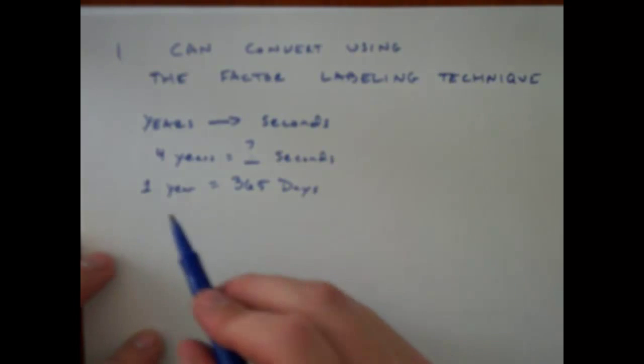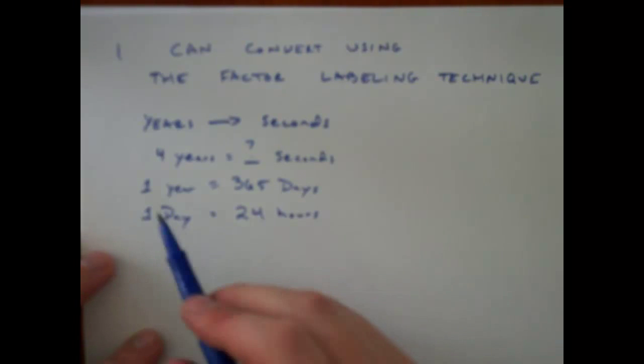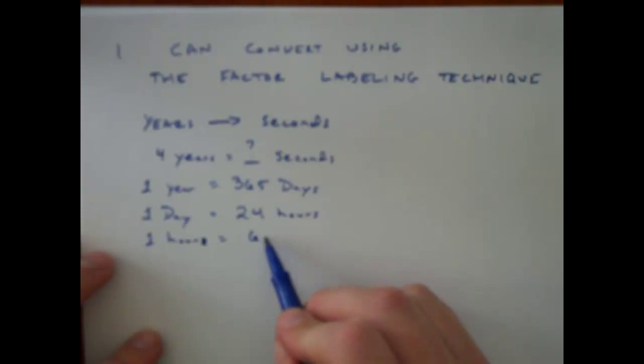And I can actually change days to something smaller. I know that in one day there are 24 hours. And I can get hours smaller. So I can say one hour equals 60 minutes.